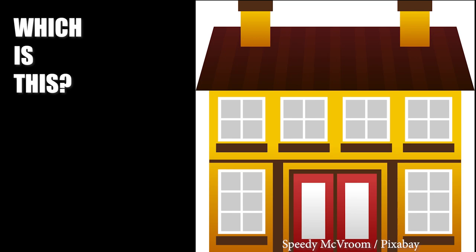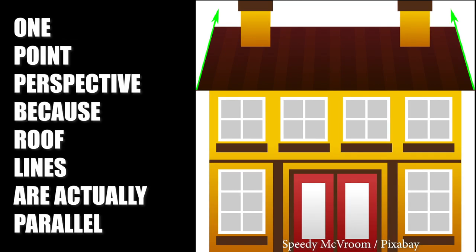The key in figuring out something like this is to look carefully for signs. Look at the roof — those roof lines are actually parallel to each other in reality. So the sense that they have a directional slope to them is because of perspective. So this is a one-point perspective image.